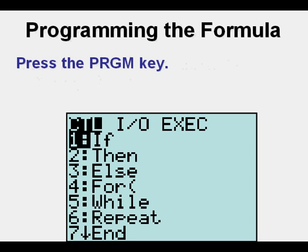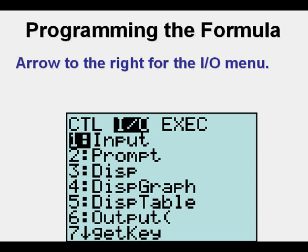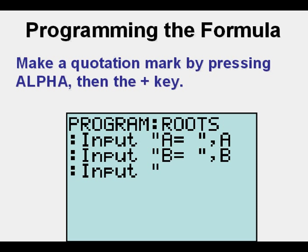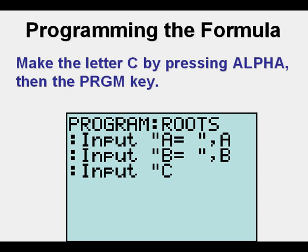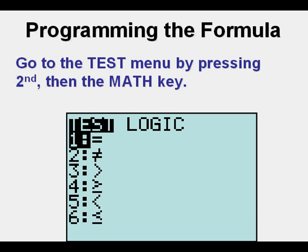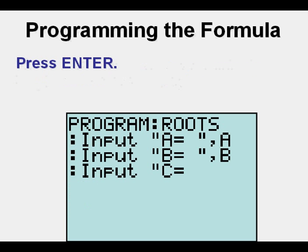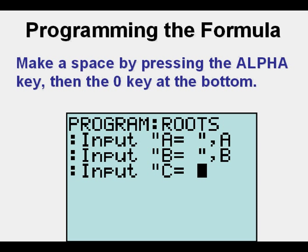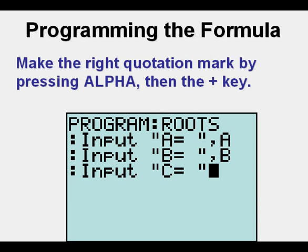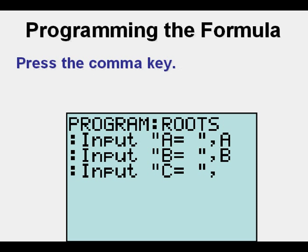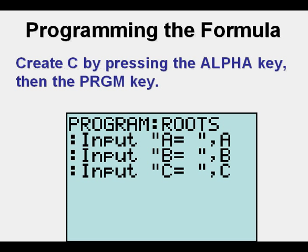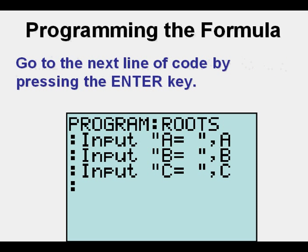Start the third line of code by pressing Enter. Press the program key, then arrow once to the right for the input/output menu and press Enter. Make a quotation mark by pressing Alpha, then the plus key. Make the letter C by pressing Alpha, then the program key. Go to the Test menu by pressing Second, then the Math key, and press Enter. Make a space by pressing Alpha, then the zero key. Make the right quotation mark by pressing Alpha, then the plus key. Press the comma key, then create C by pressing Alpha, then the program key.